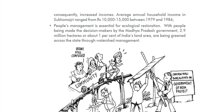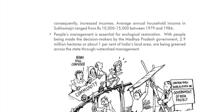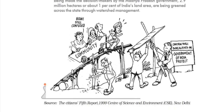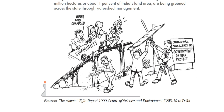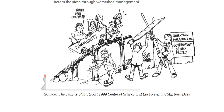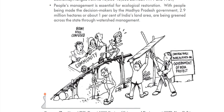Through watershed management, 2.9 million hectares — about 1% of India's land area — has been greened across the state. This involved water shed preparation, crop cultivation, and watershed-based approaches. So friends, we have seen this chapter — Development and Resources — which is our first chapter completed. Don't forget to watch my new video for the next chapters.